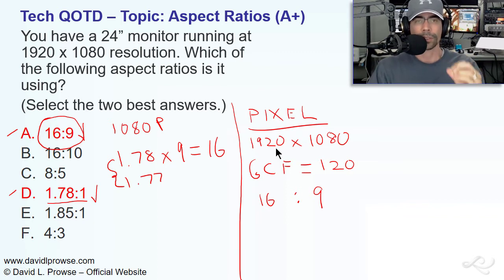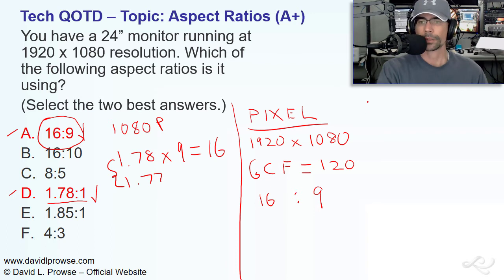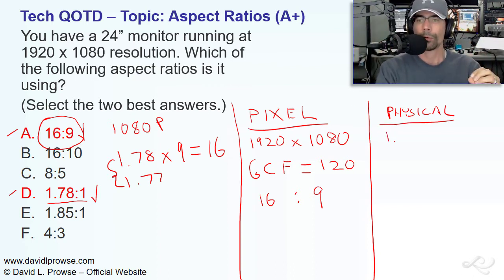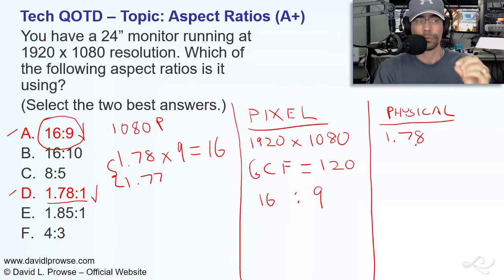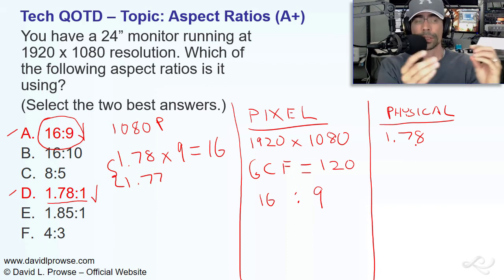So, that is the pixel side of things. And that's what's most important, as I say, for the exams, for the tech world. But then there's the physical side of things. And by physical, I mean measuring the actual screen physically. You know, and that's when we get that 1.78. So, we're going to use my middle monitor here as an example. It's an Asus VG248. And that's a 24-inch monitor. It's meant to run at 1920 by 1080. And that's why I got it.